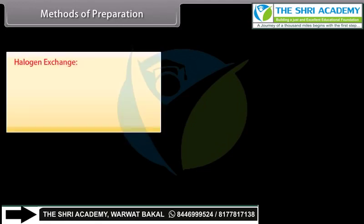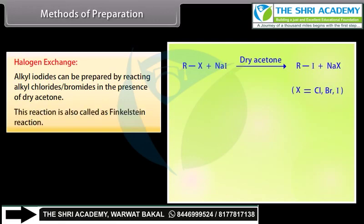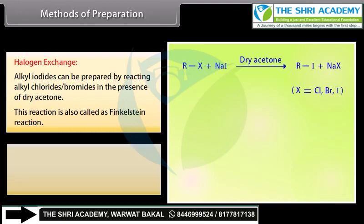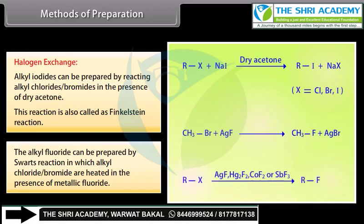Halogen exchange: alkyl iodides can be prepared by reacting alkyl chlorides or bromides with sodium iodide in the presence of dry acetone. This reaction is also called the Finkelstein reaction. Alkyl fluorides can be prepared by the Swartz reaction, in which alkyl chlorides or bromides are heated in the presence of metallic fluoride.